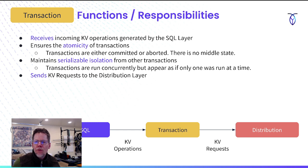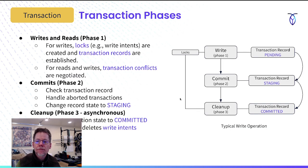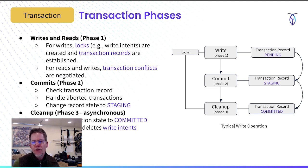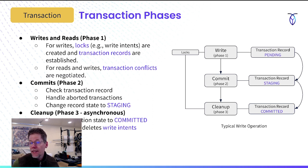Once the transaction layer is done, it sends KB requests to the distribution layer. There are three transaction phases we typically talk about. For writes, locks are created as well as transaction records. One type we'll talk about a lot is write intents. For both reads and writes, transaction conflicts are negotiated during this first phase.